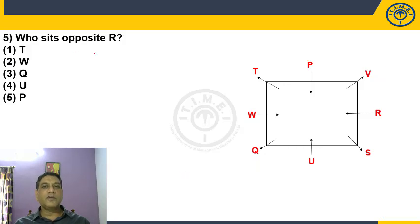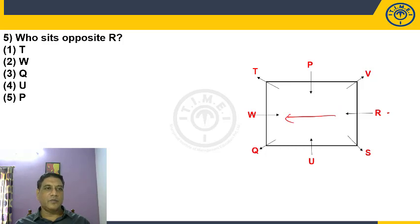Question 5: Who sits opposite R? R is here, and opposite R we have W. Choice 2.